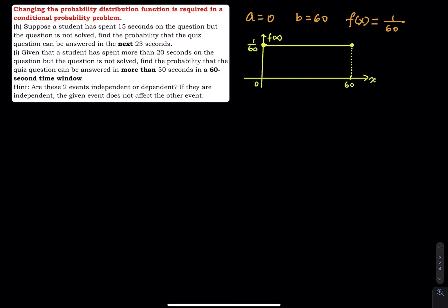This video is the continuation of the previous problem. So in the previous problem, we mentioned that on average students spend 60 seconds to answer a quiz question, and the time follows uniform distribution.